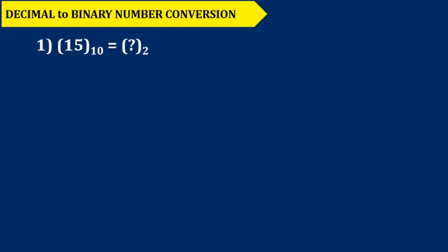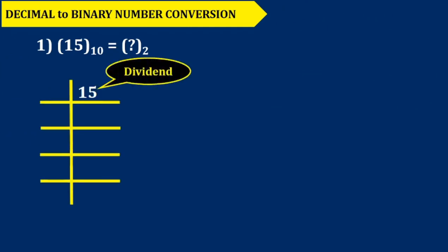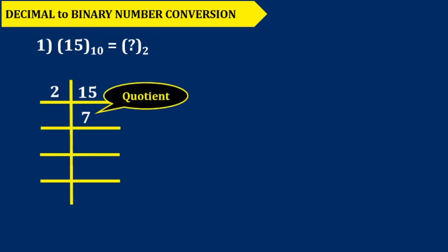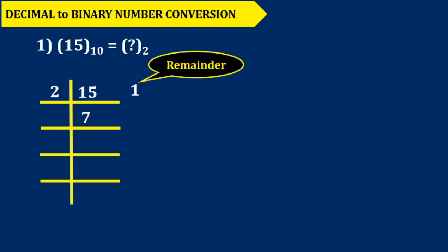Let's convert this decimal number into binary. When 15 is placed at this position it is called the dividend. 2 is the divisor, which is the base of binary number. Here 7 is the quotient and 1 is the remainder. Again, 7 should be divided by 2.